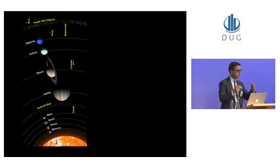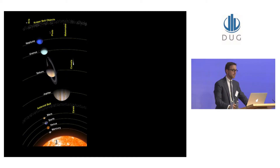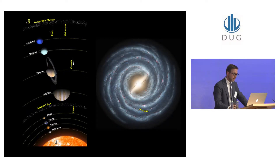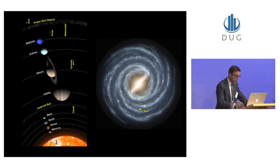As our knowledge of the universe expanded, our position in that universe has constantly diminished. We now understand that the Sun itself is but one of about 300 billion stars or so that make up our galaxy, the Milky Way, which itself is but one tiny little piece of a much grander cosmic tapestry of stars and galaxies.